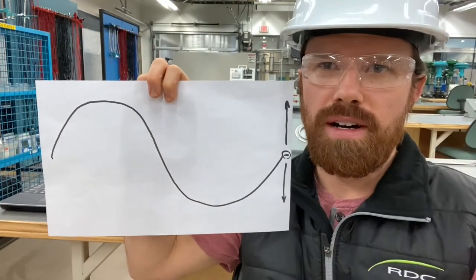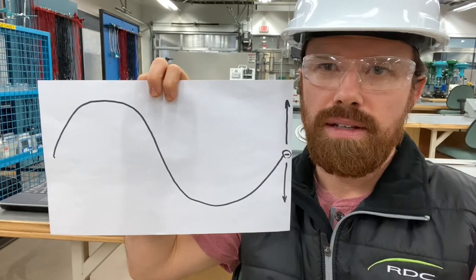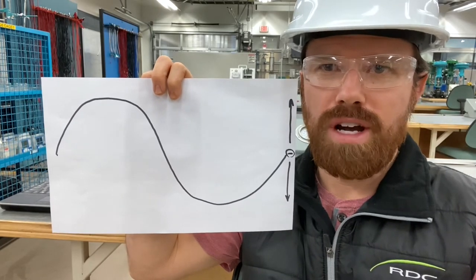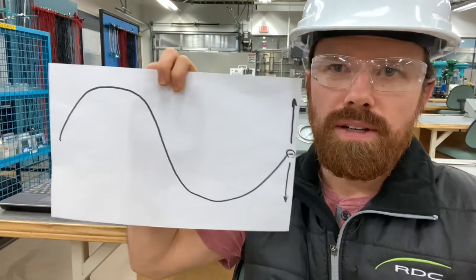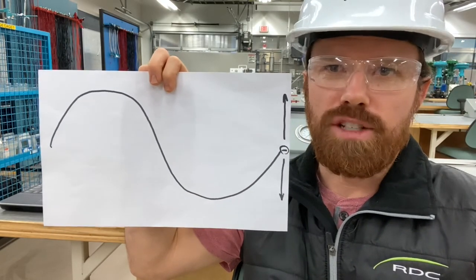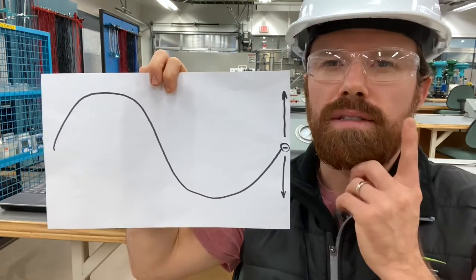The electric field part of our electromagnetic wave would kind of be like if you think about dropping something in your bathtub and you see those waves rippling out. That's like your electric field of that wave. Gives me an idea. Here's my bathtub.